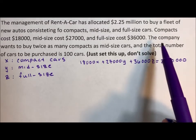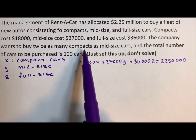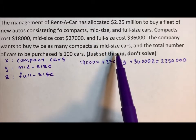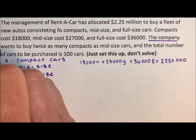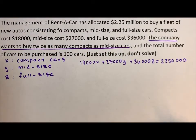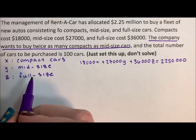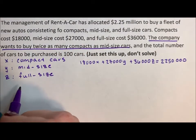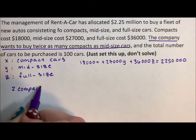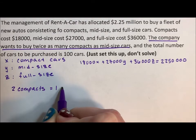The next one says the company wants to buy twice as many compacts as midsize. So this sentence often trips students up. So let's think of numbers. So if they buy twice as many compacts as midsize, if they buy two compacts, they're buying one midsize.